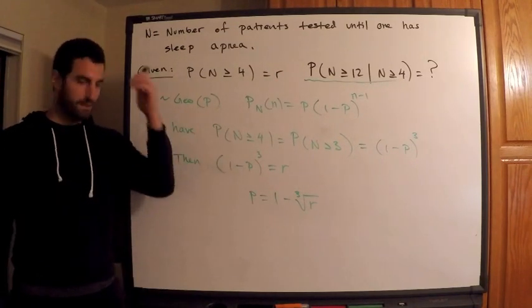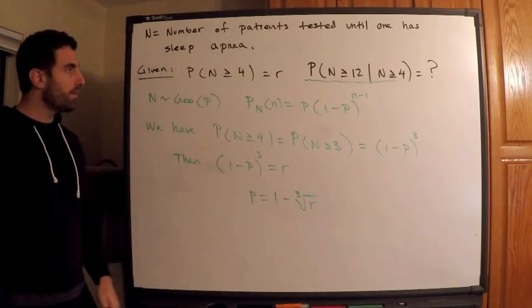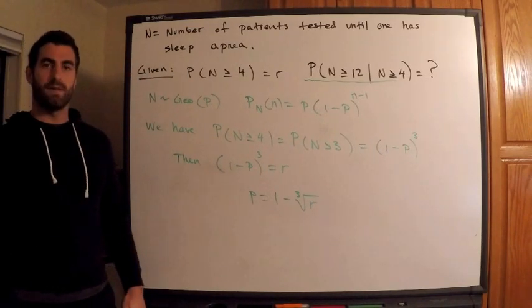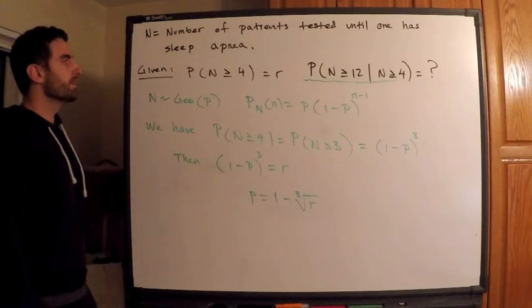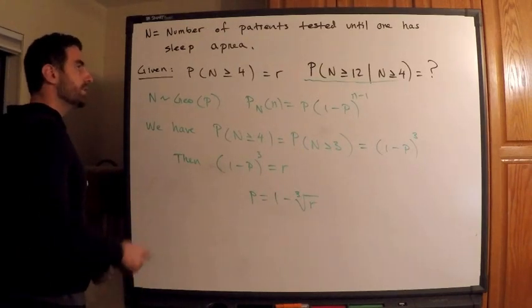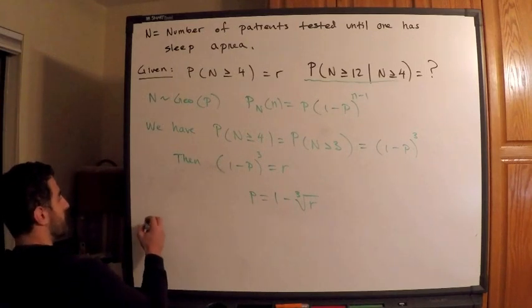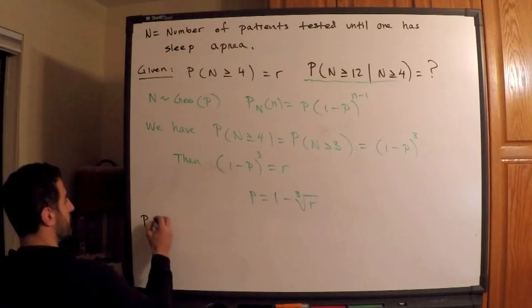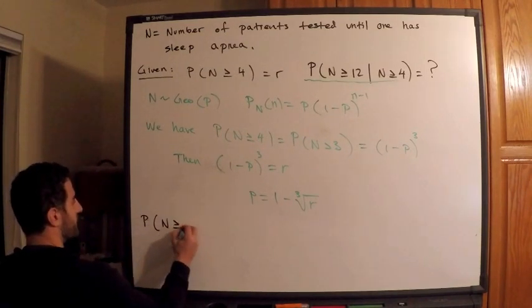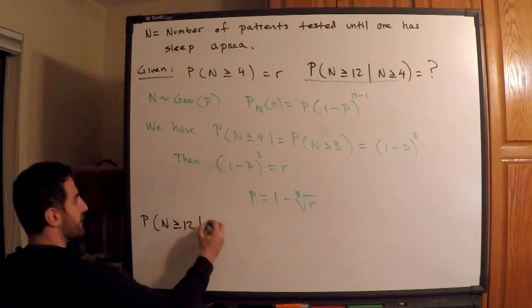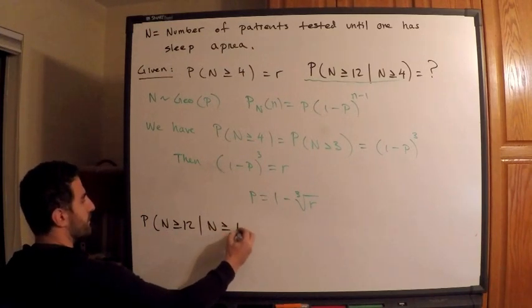I'm more or less ready to find what I'm looking for, which is this thing. This is kind of my scratch work building up to that. I want to use the memoryless property here. So I'm looking for the probability that N is greater than or equal to 12 given that N is greater than or equal to 4.